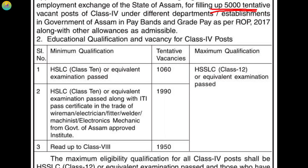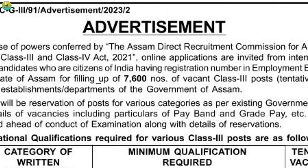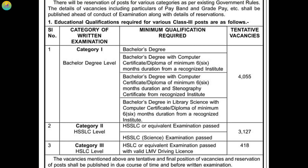For Grade 3 at bachelor degree level, the minimum qualification required is a bachelor degree. A bachelor degree with a computer certificate or diploma of six months is needed. A bachelor degree in library science with a computer certificate also qualifies. Category two is at SSLC level or higher secondary level, requiring an SSLC equivalent examination pass.